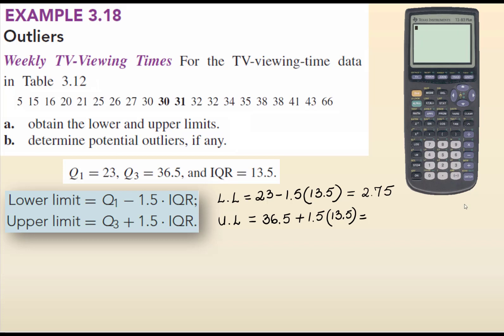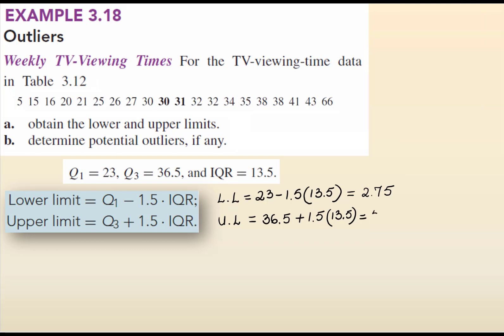Now, if you notice, the lower limit is 2.75, and 5 is greater than 2.75, the minimum. So 5 is really the minimum. It falls within the lower limit range.